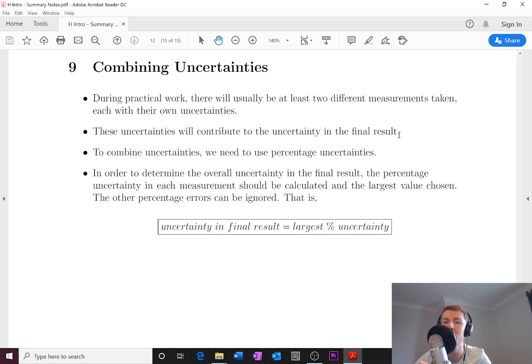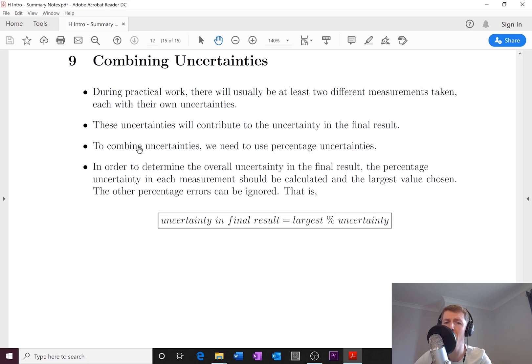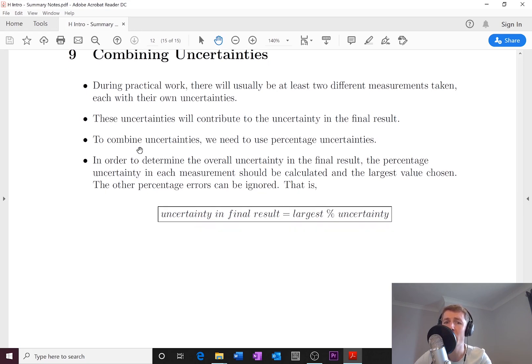These uncertainties will contribute to the uncertainty in the final result, but we need to know by how much. So we need to combine these two uncertainties for the distance and the time to get the uncertainty in our final value of speed. Getting the speed value itself is quite straightforward, just distance over time, but we don't just divide our two uncertainties. It doesn't work like that.